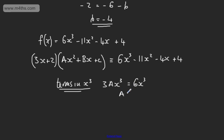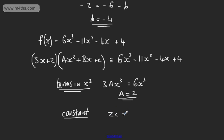So 3A must equal 6, therefore A is equal to 2. If we now consider the constant term, the only term we get is 2c. So 2c is equal to 4, therefore c is equal to 2. I'm using the method of equating coefficients.